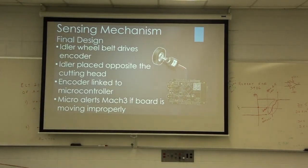Just to reiterate a little bit, the final design has an idler wheel and a belt, and the encoder is linked to the microprocessor that we're using, the Freedom KL25Z, and there's a little bit of code there to dictate or take the steps of the encoder and translate that into linear feet per minute.